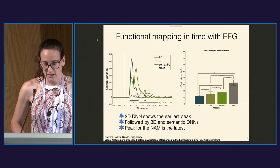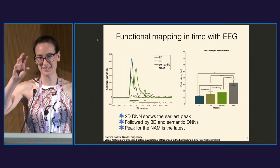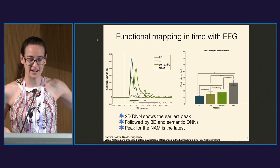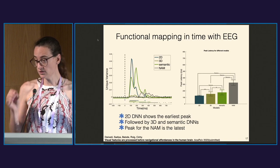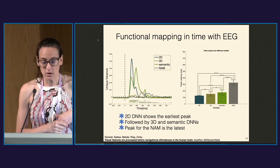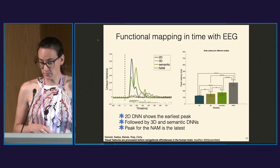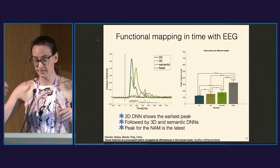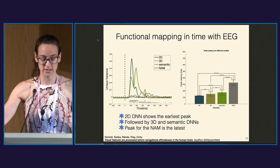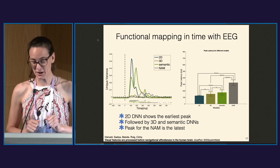Here are some of the results: you see the unique variance explained by models trained on 2D functions, 3D functions, semantic functions, and a navigational affordance model — a behavioral model where people assessed which paths were possible to navigate. DNNs trained on 2D functions show the earliest peak, followed by those trained on 3D, then very closely related in timing comes semantic, and then the peak of the navigational affordance model is the latest. This suggests that visual features are processed before navigational affordance in the human brain.